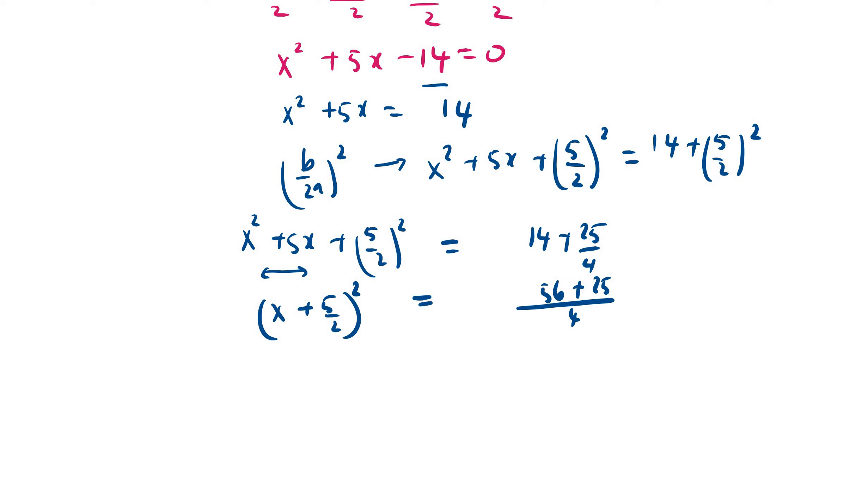We proceed. You have (x + 5/2)² equal to 81/4. So we're going to take square root both sides. Eventually you will be having here plus or minus. So x + 5/2 equals to ±9/2.